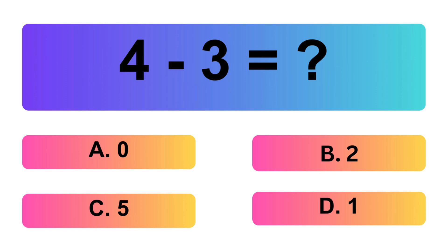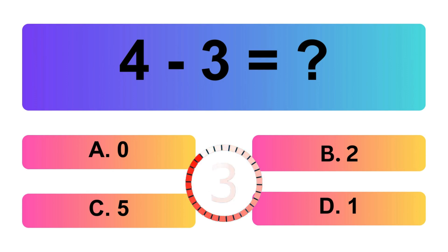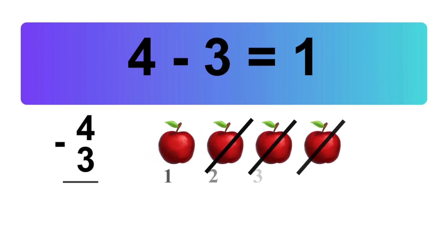4 minus 3 is equal what? Let's count it: 1. So, the answer is 4 minus 3 is 1.